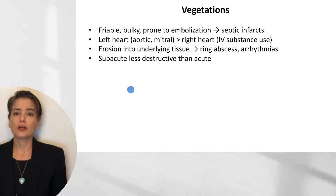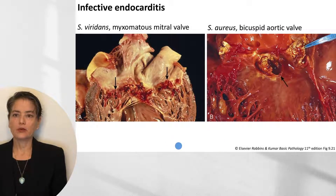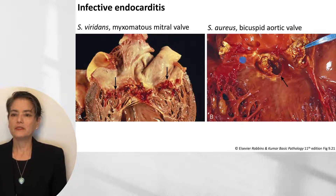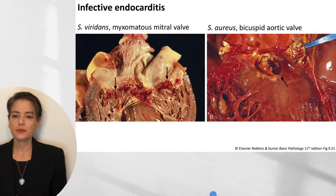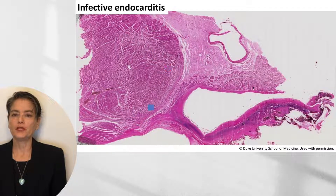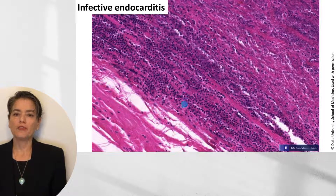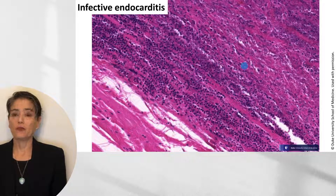Subacute infections tend to be less destructive than acute infections. Here we have two examples of infective endocarditis: a Strep viridans infection on a myxomatous mitral valve, showing the vegetations here, and Staphylococcus aureus involving a bicuspid aortic valve — much more destructive, with formation of a ring abscess showing actual erosion into the cardiac muscle. Histologically, we can see the cardiac muscle and attached valve. On higher magnification, there is actual inflammation of the valve tissue with sheets of neutrophils indicating bacterial infection and areas of necrosis, consistent with complete destruction of the valve leading to acute regurgitation.